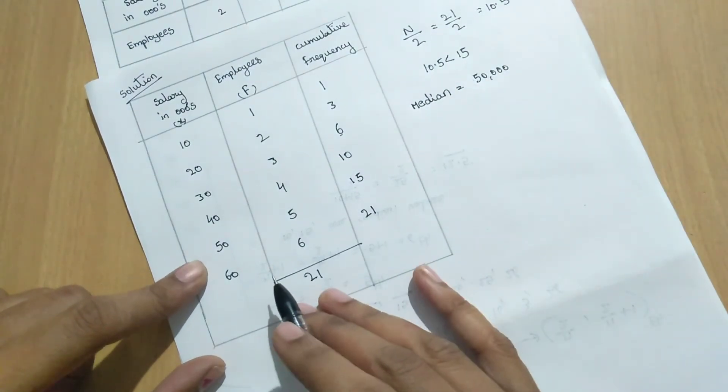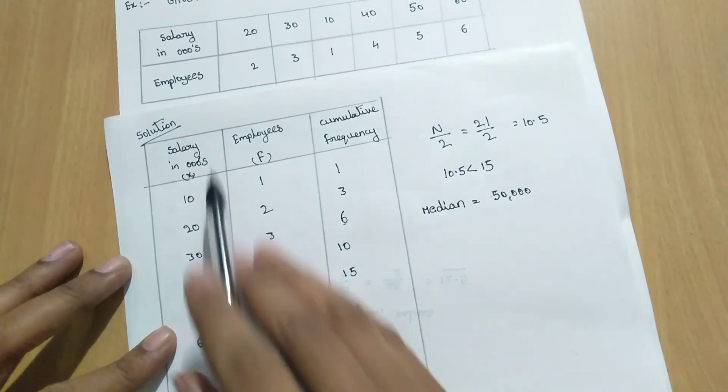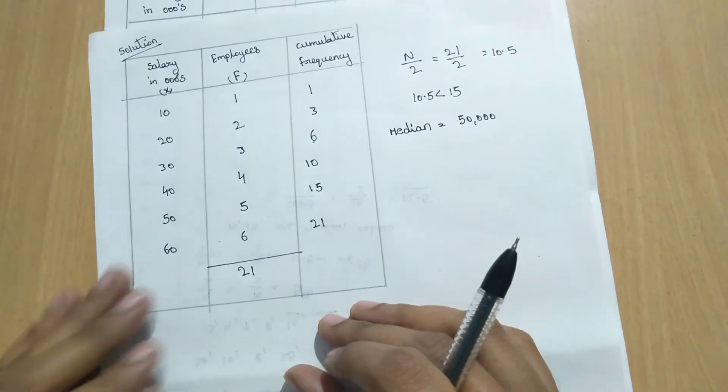What is the median value? 50,000. This is the problem, example problem on median for grouped data discrete series. Thank you.